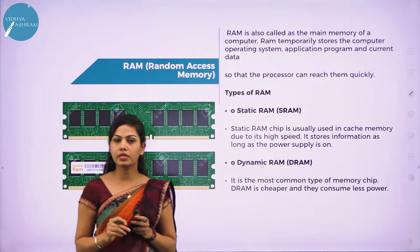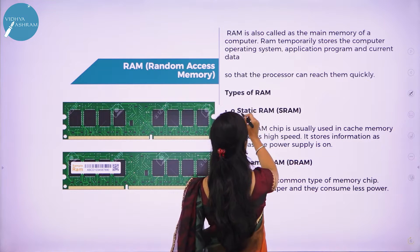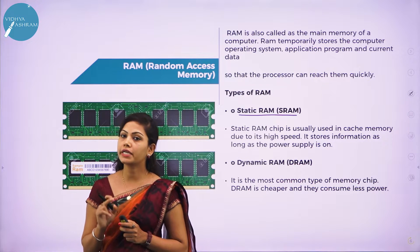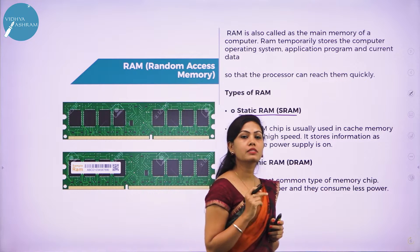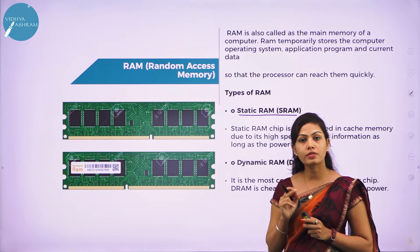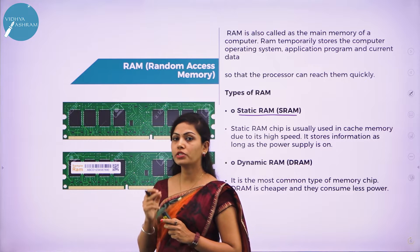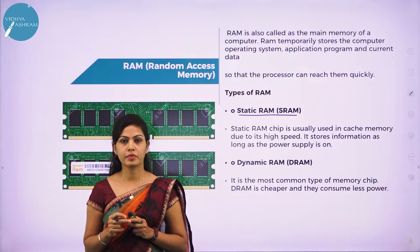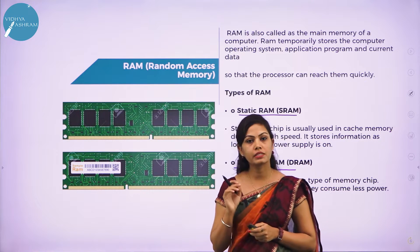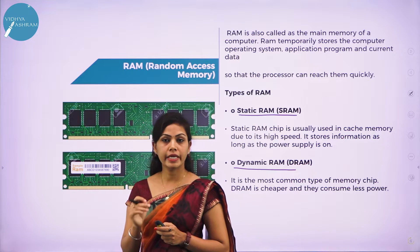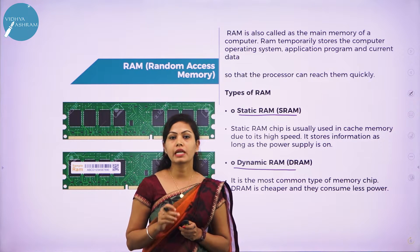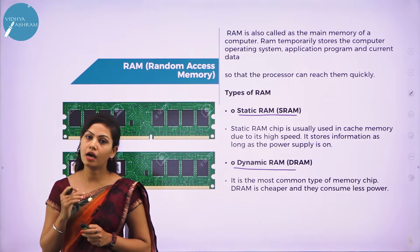SRAM stands for static RAM. Static RAM is made up of 4 to 6 transistors. It keeps data in memory as long as power is supplied to the system, unlike DRAM. SRAM is faster but also more expensive, and it stores information as long as the power supply is on. DRAM stands for dynamic RAM. It is the most common type of memory chip. DRAM is cheaper and consumes less power.